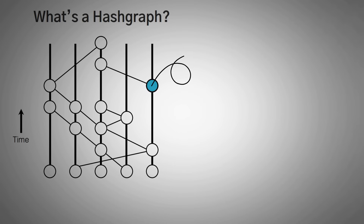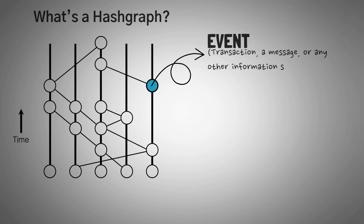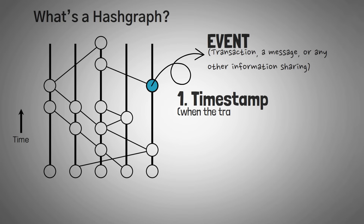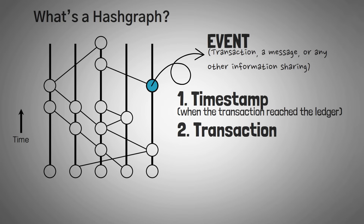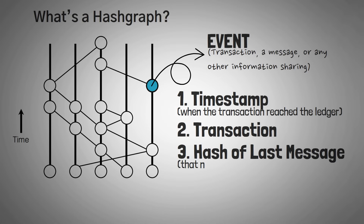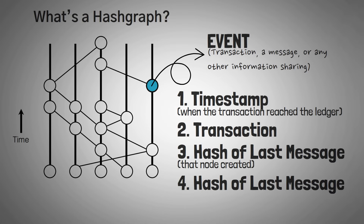What a Hashgraph does is make sure that every event on the Hashgraph shows up in the ledger — which can be a transaction, a message, a smart contract, or any other form of information sharing. Each event usually has four things: a timestamp of when the transaction reached the ledger, the transaction itself, the hash of the last message created by the node, and the hash of the last message created by the node that sent them this message.